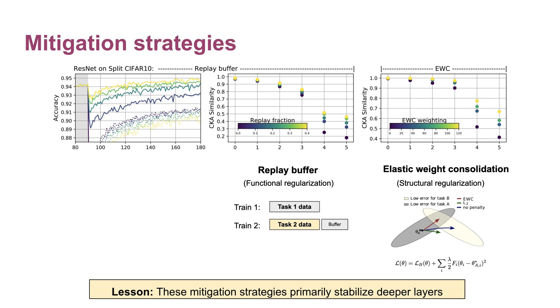This suggests that even though these two methods come from different classes of mitigation strategies, with the replay buffer being a functional regularizer and EWC being a structural regularizer, they might actually be acting in largely the same way by stabilizing representations of deeper layers. We show in the paper how it's possible to mitigate forgetting without doing this, so this is not a foregone conclusion.